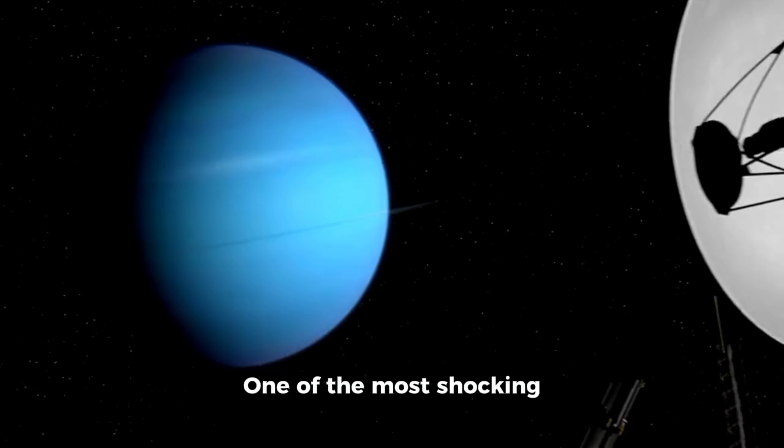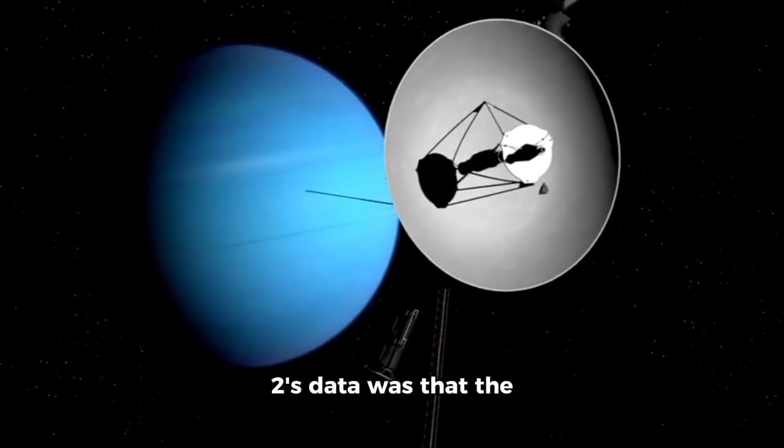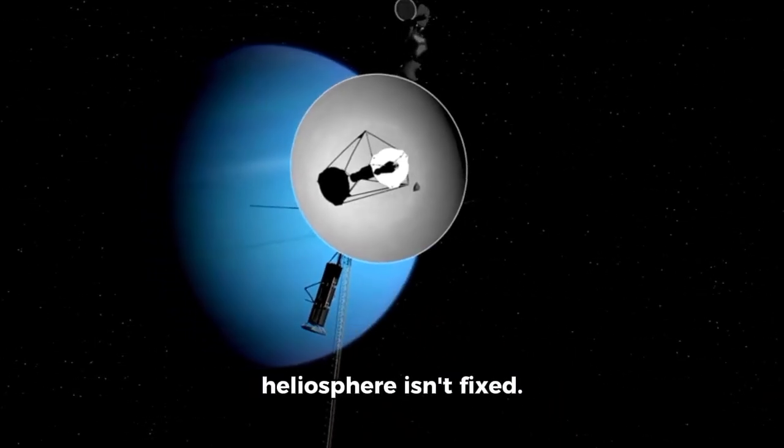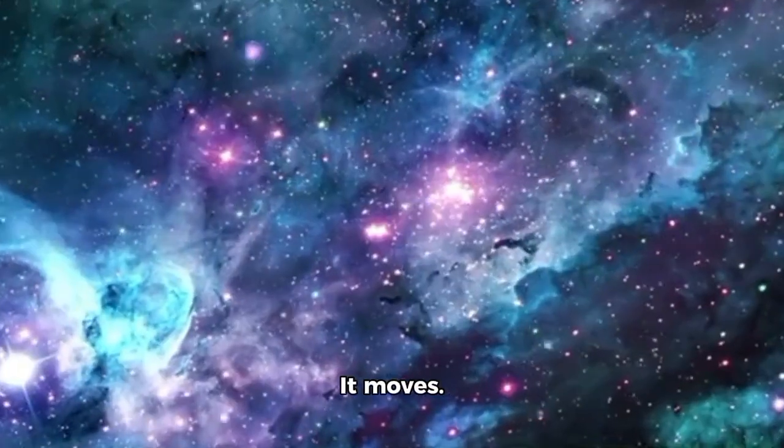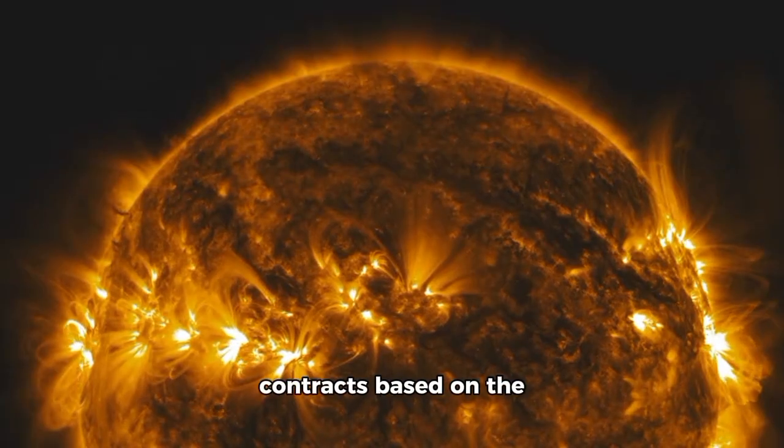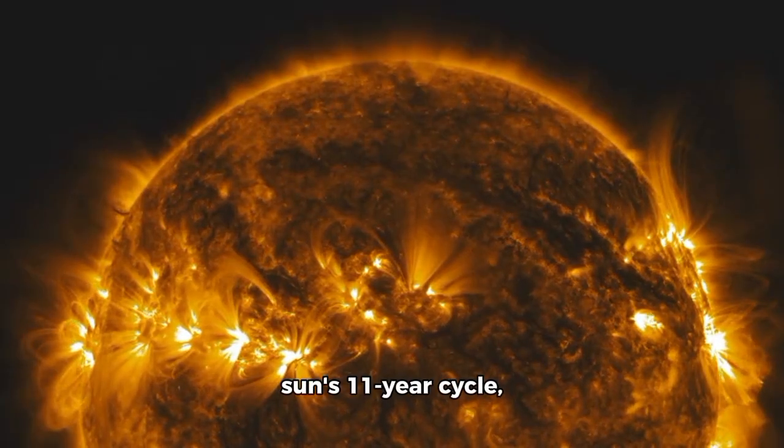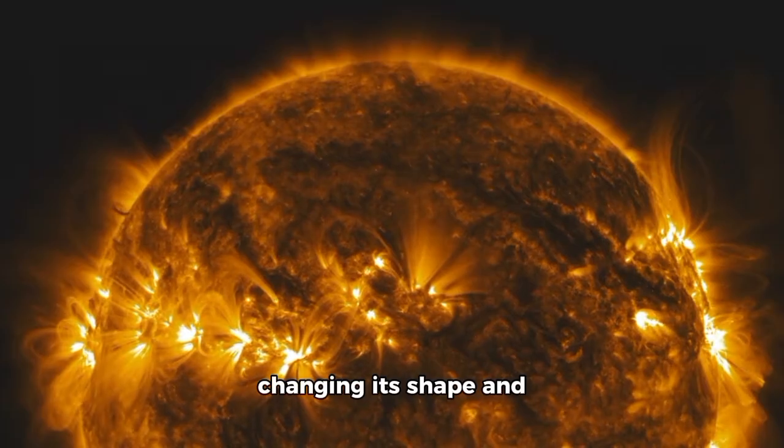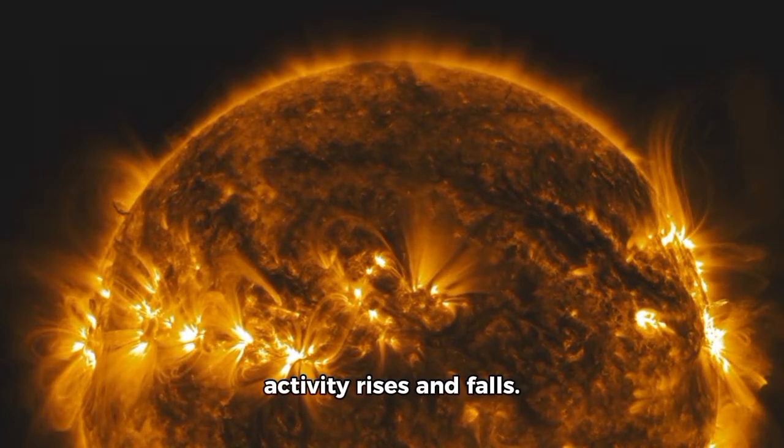One of the most shocking revelations from Voyager 2's data was that the heliosphere isn't fixed. It breathes. It moves. It expands and contracts based on the sun's 11-year cycle, changing its shape and thickness as solar activity rises and falls.